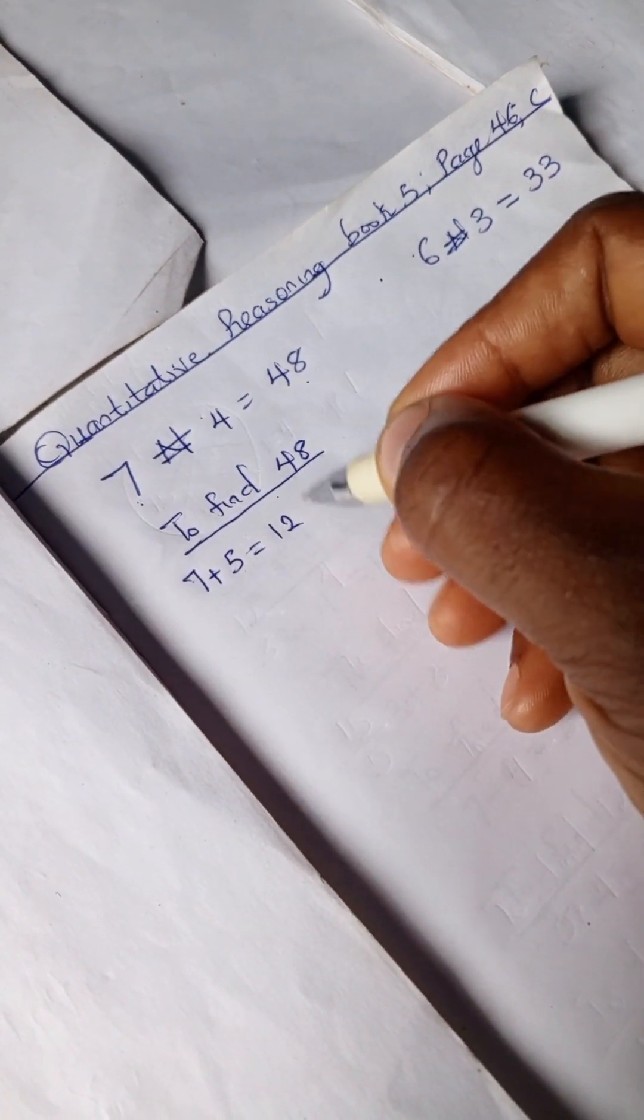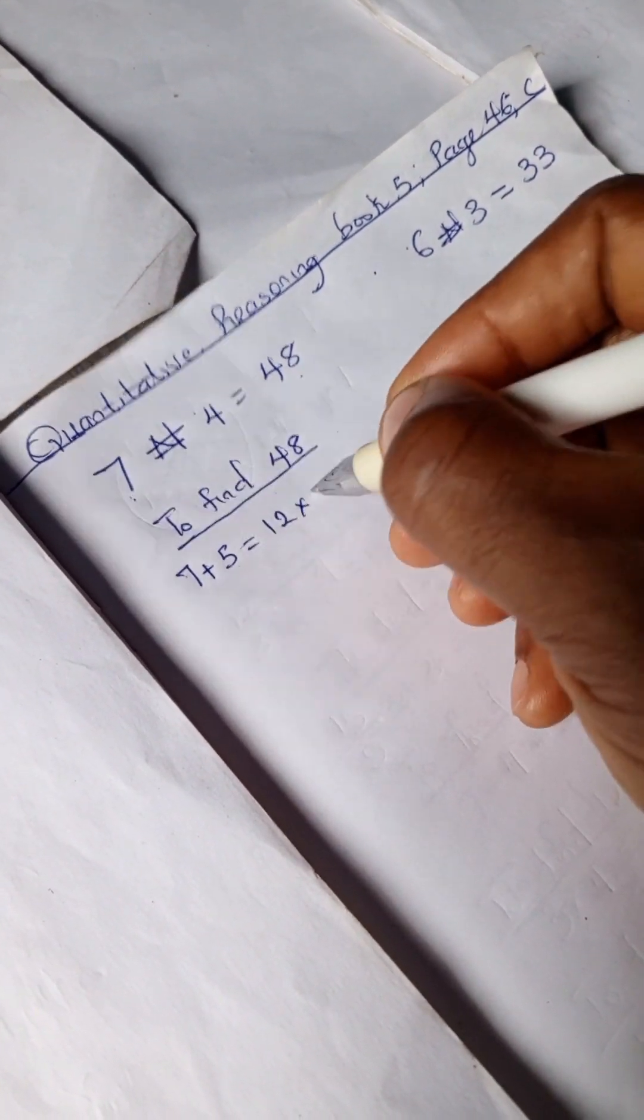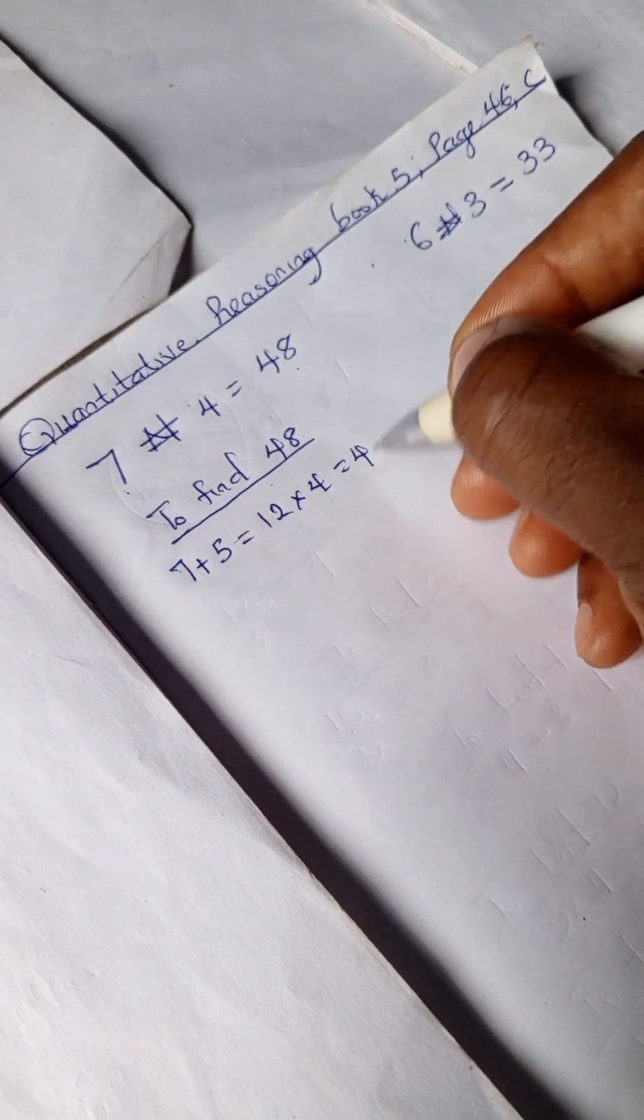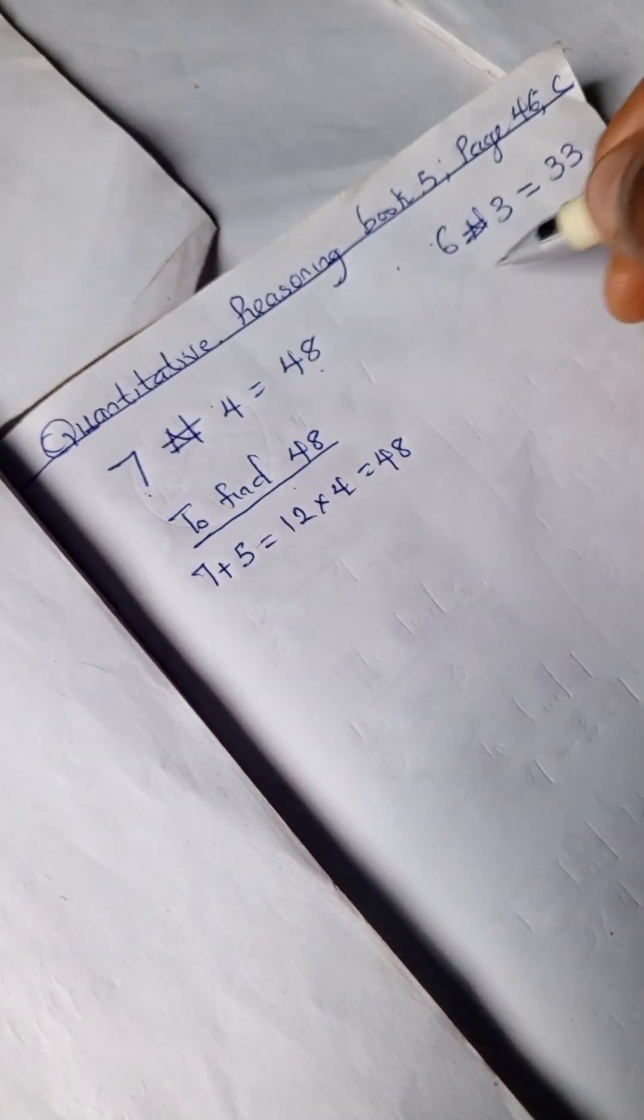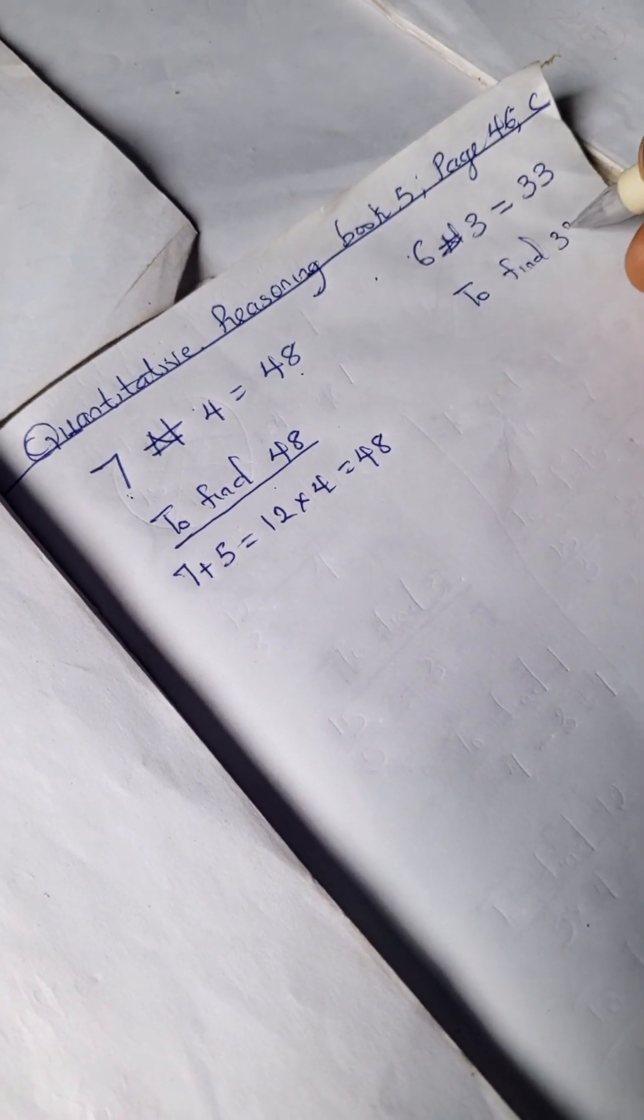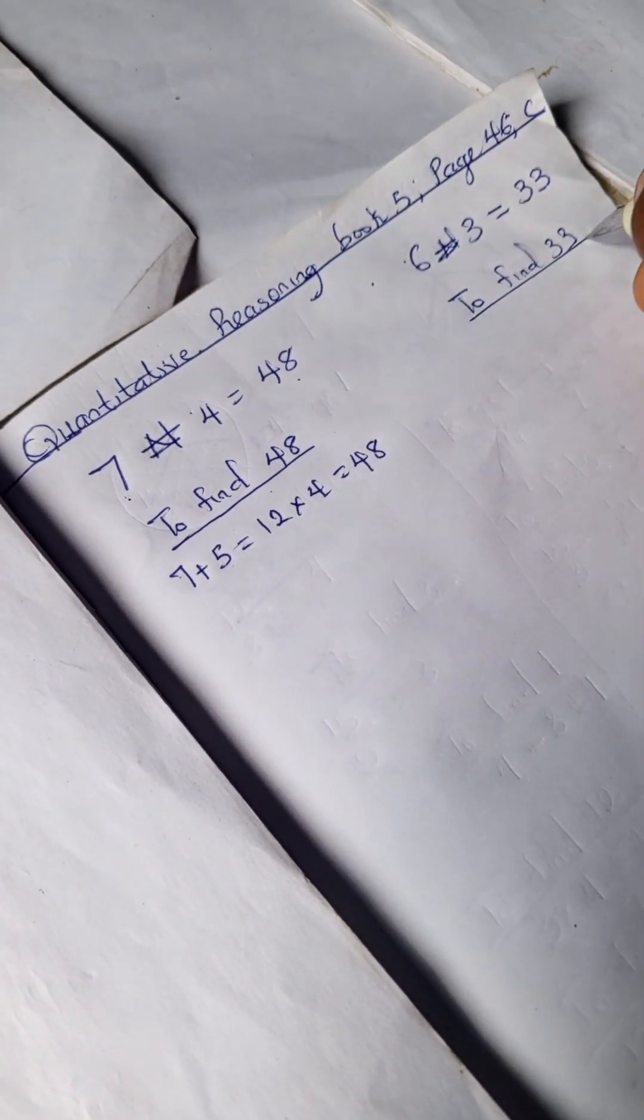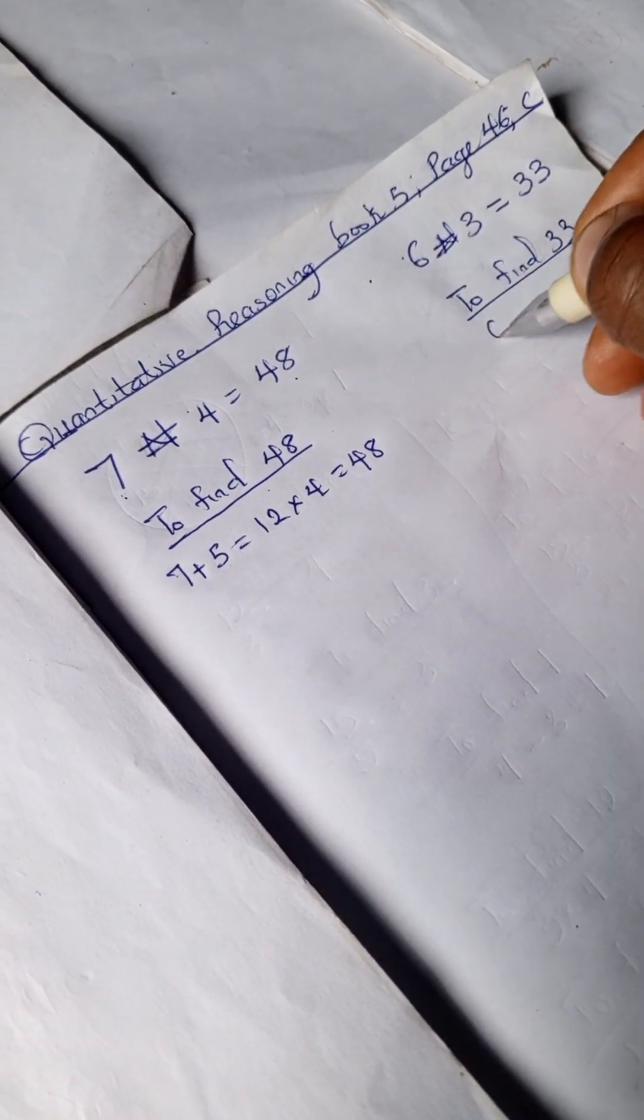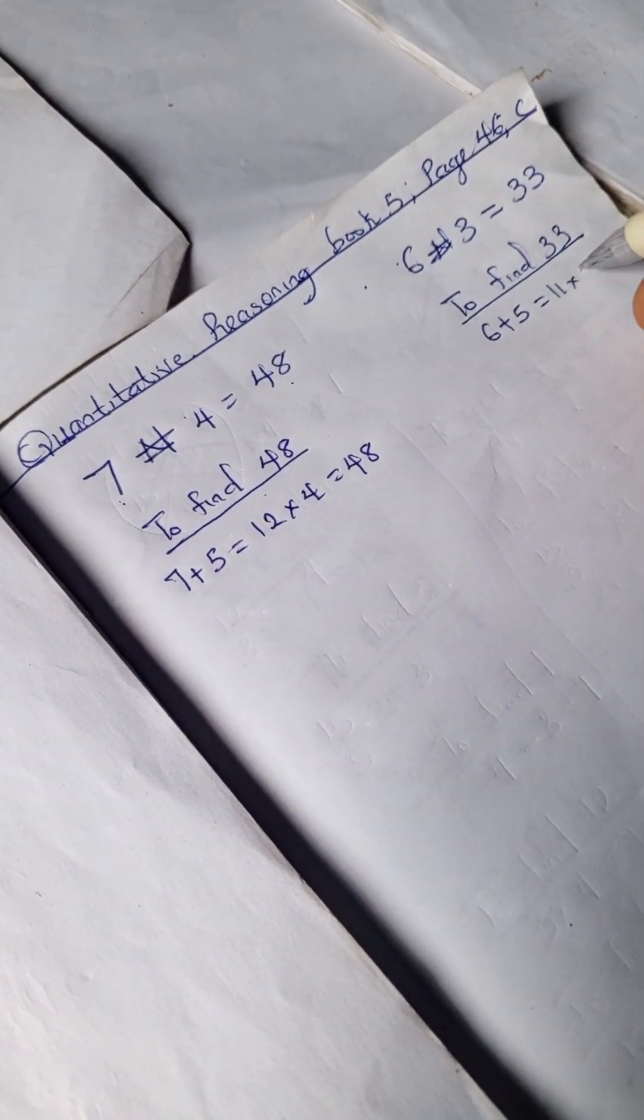If we do the same thing here to find 33, we introduce the secret number. 6 + 5 = 11, and 11 × 3 = 33. We can go on with this to find the other numbers.